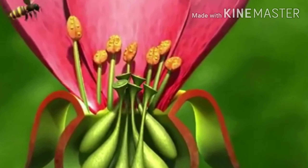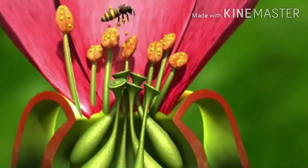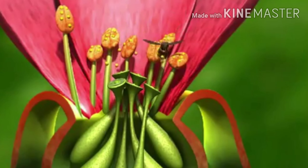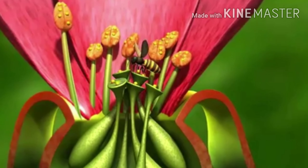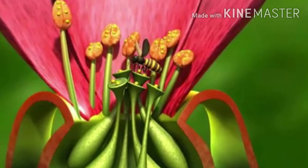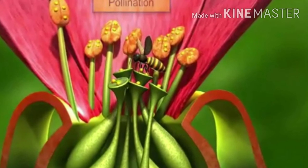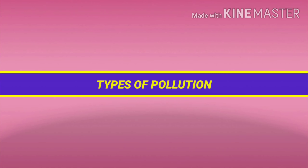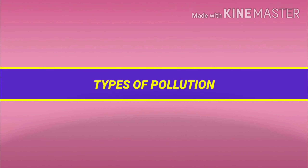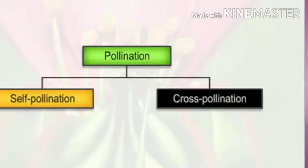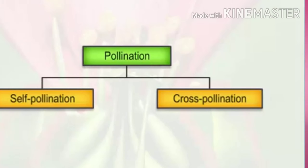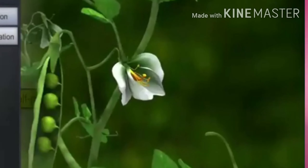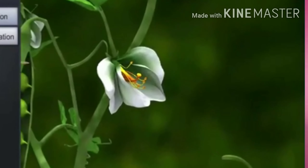This process is facilitated by insects, birds, and butterflies. They are called the pollinating agents. Pollination is classified into two types: self-pollination and cross-pollination.